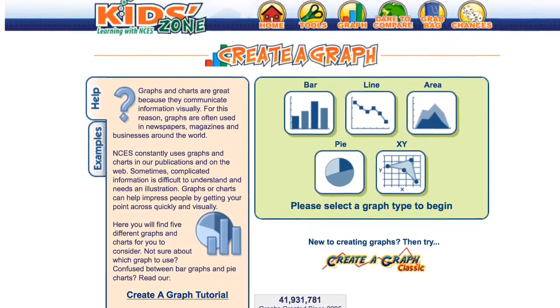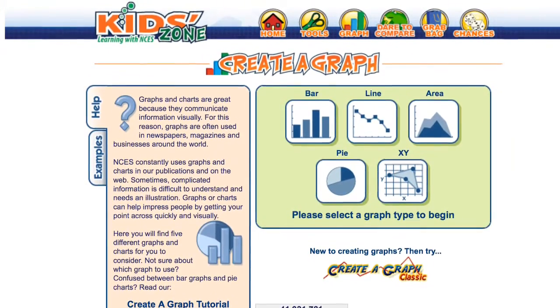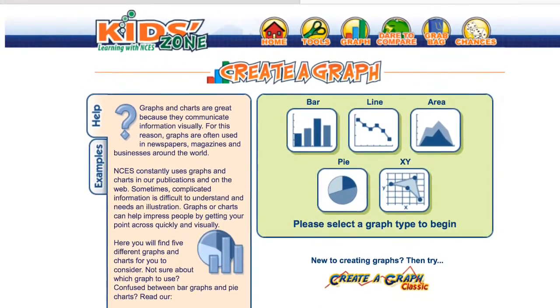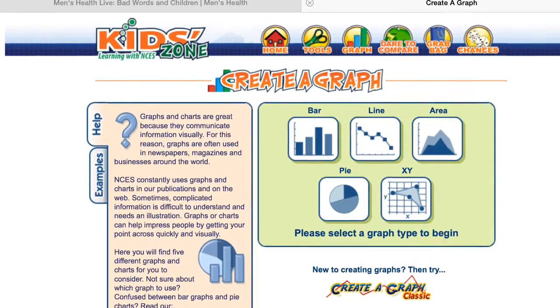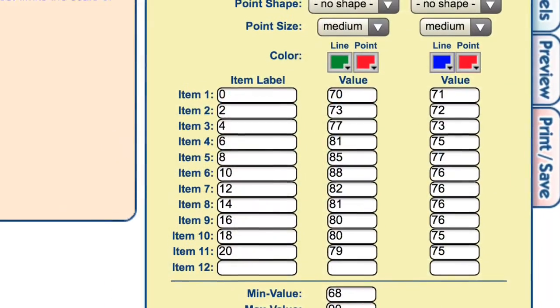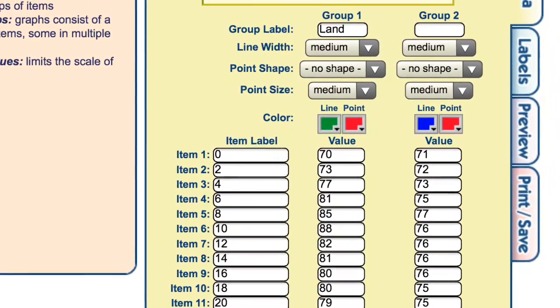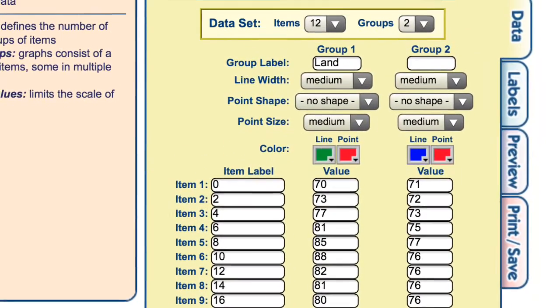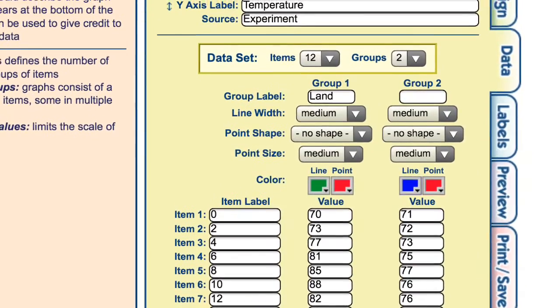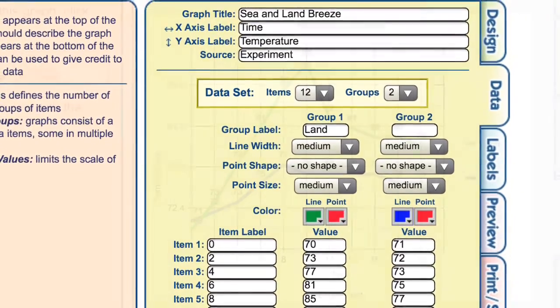So, we then go to a website called Create a Graph, which I have used several times for different things. As you can see, you can choose the kind of graph that you want to make, and then plug your data in, choosing colors and how many different variables you have. Then it will graph that information for you.